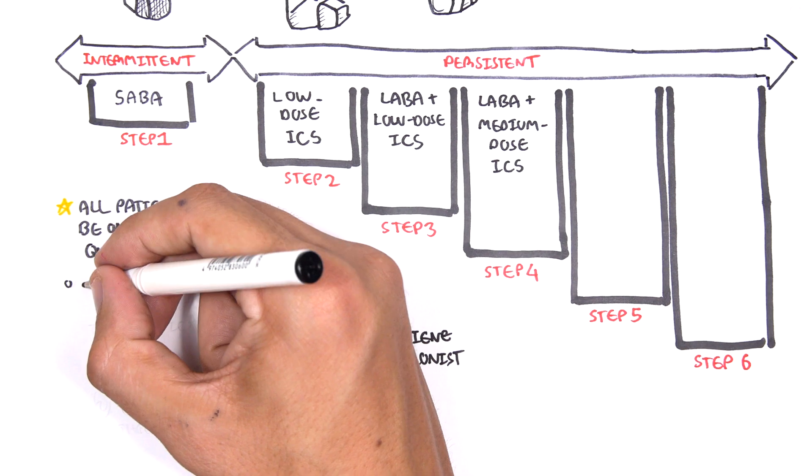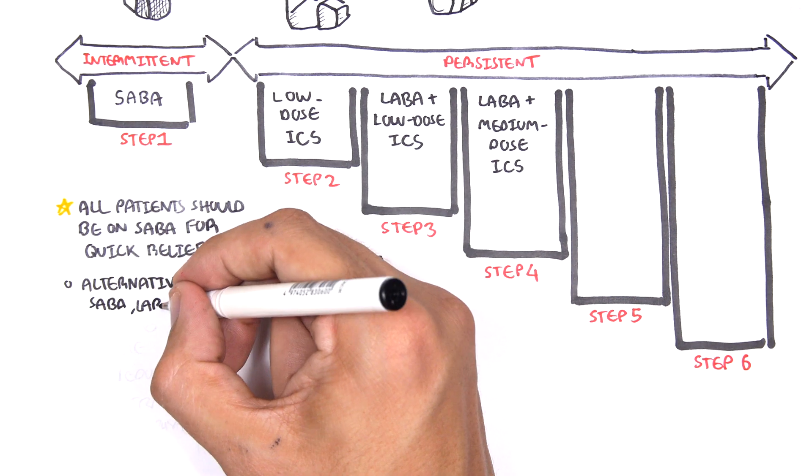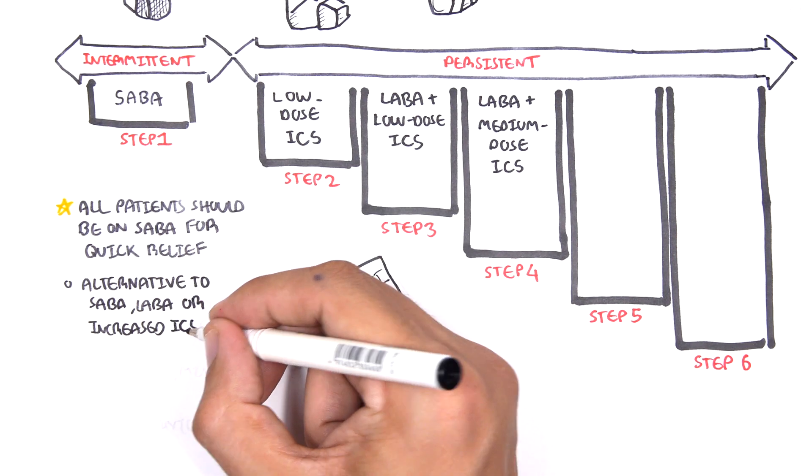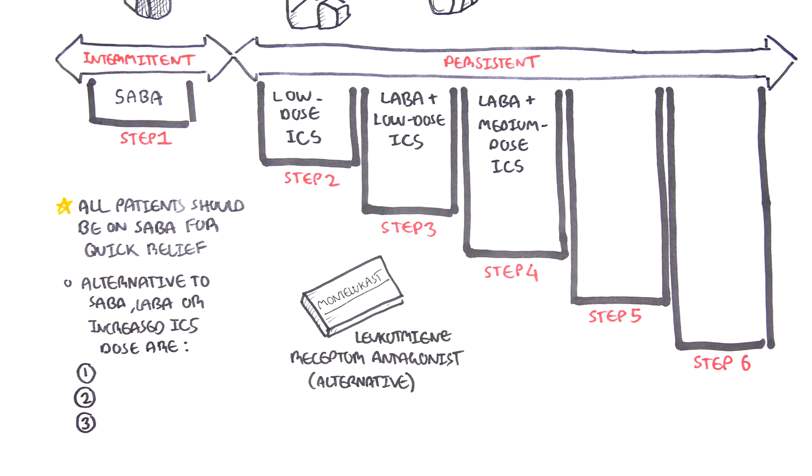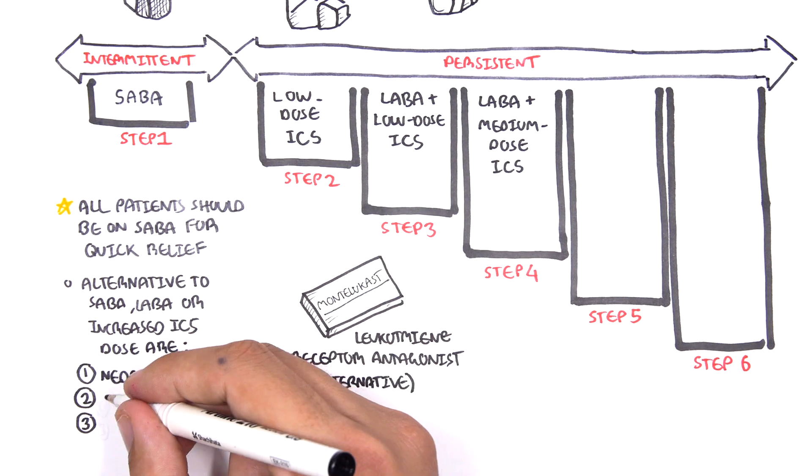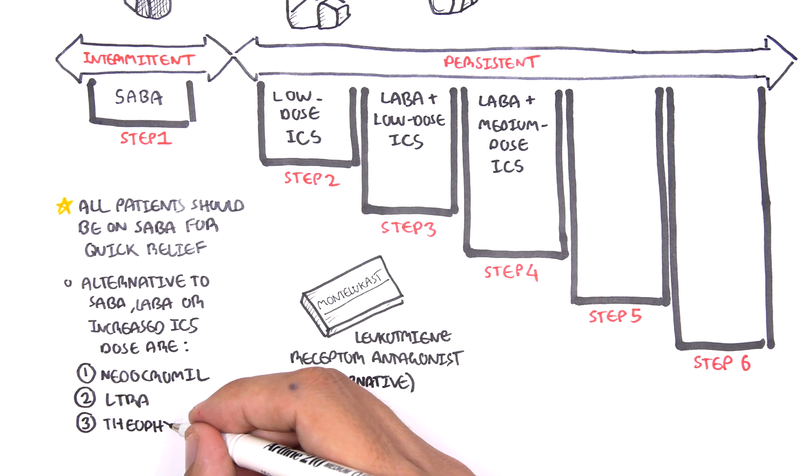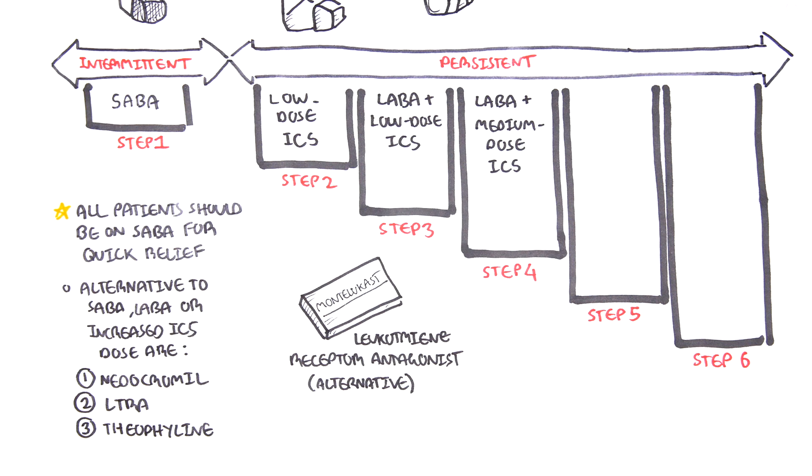Alternatives to the short-acting beta agonist, the long-acting beta agonist, or the inhaled corticosteroid dose are medications such as nedocromil, the leukotriene receptor antagonist as I mentioned earlier, and theophylline. These medications can be used as alternatives to the SABA, LABA, and the ICS.